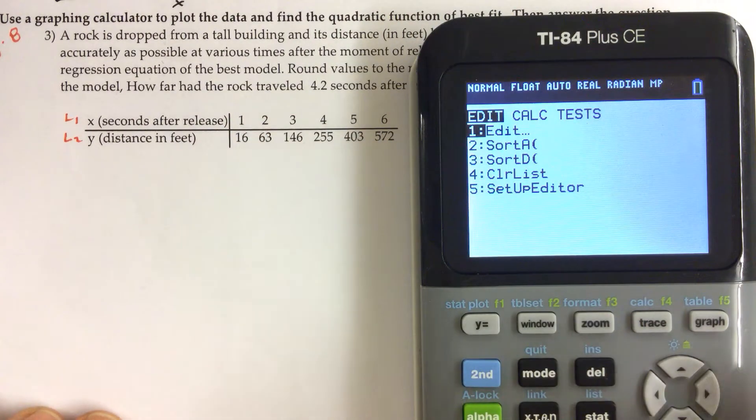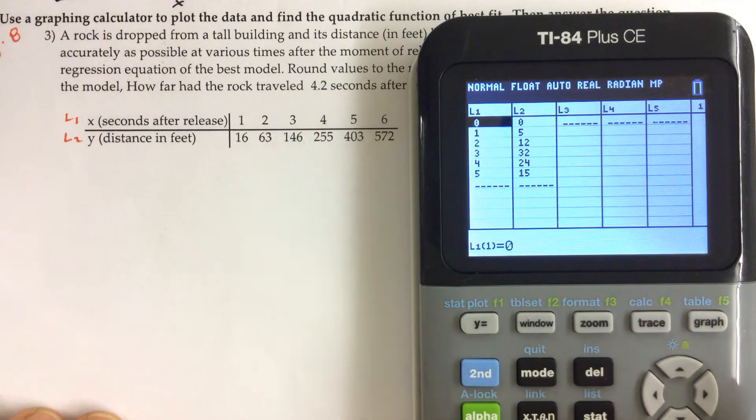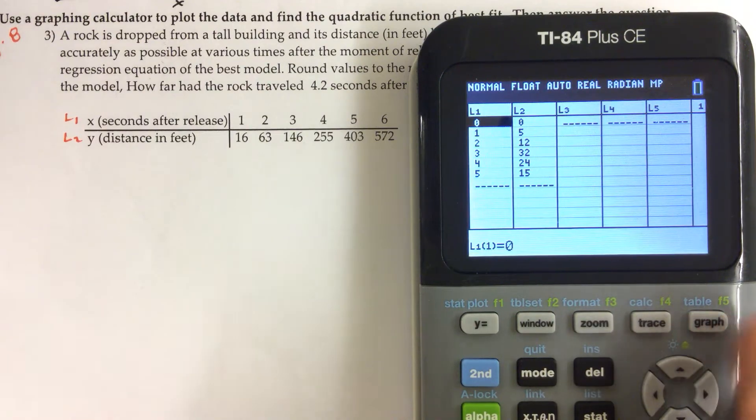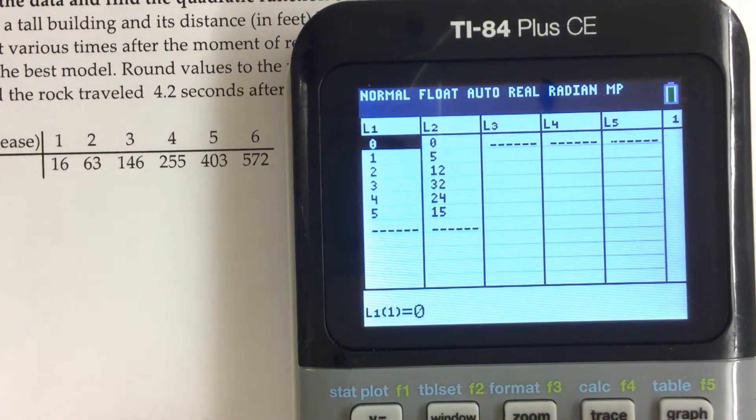We're going to enter some data. We're going to edit our lists by hitting enter, and then if we have any data already in those lists, I'm going to go ahead and zoom in on this. If we have any data at all in there, we want to clear it out.